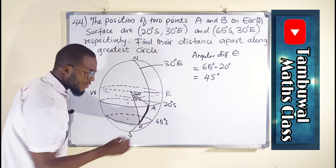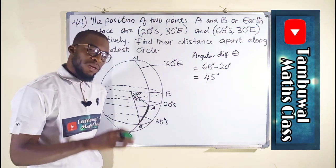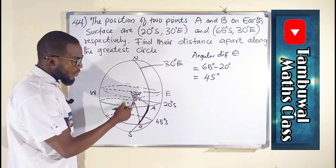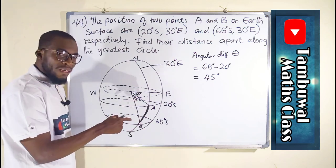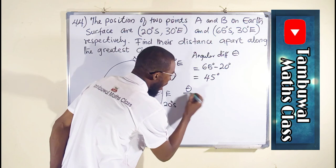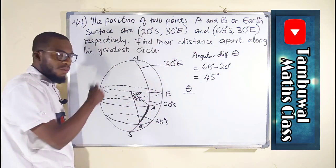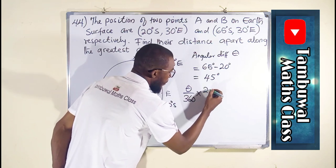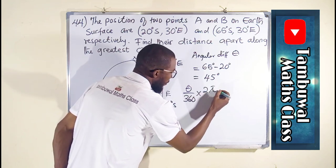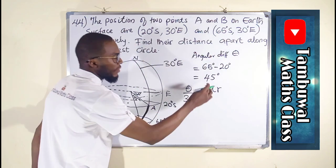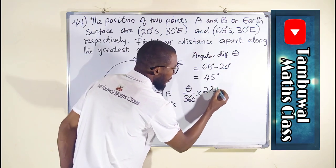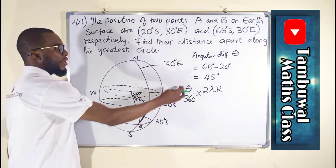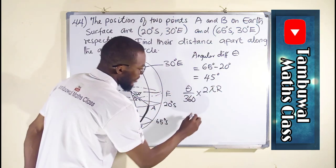We are looking for the distance, which is an arc. From the circle formula, the length of an arc equals the angle subtended by that arc (theta) out of the total angle around a circle (360 degrees), multiplied by 2π and the radius. Here we use capital R, which is 6,400 kilometers approximately, and our theta is 45 degrees.